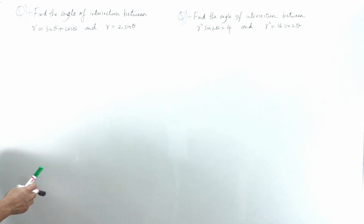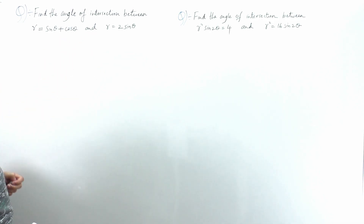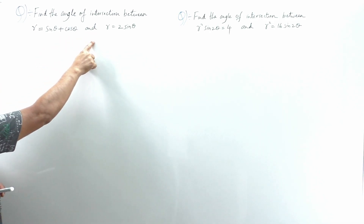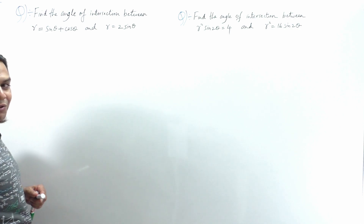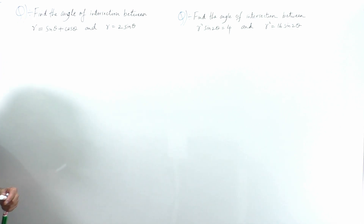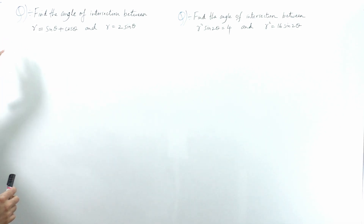The first question is: find the angle of intersection between r = sinθ + cosθ and r = 2sinθ. We apply the same technique as we did in the previous problems.